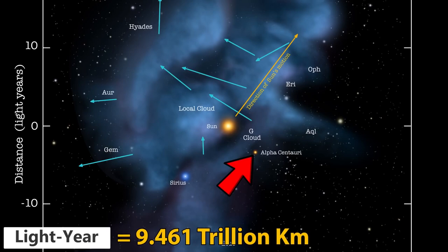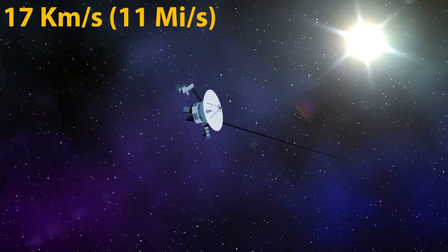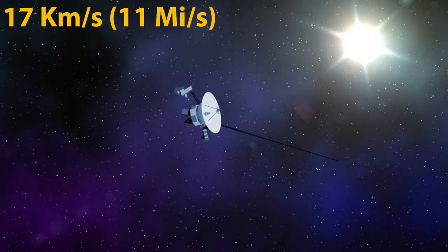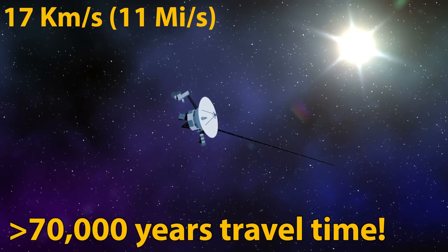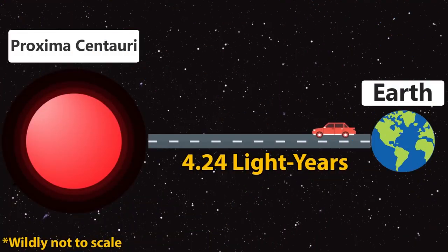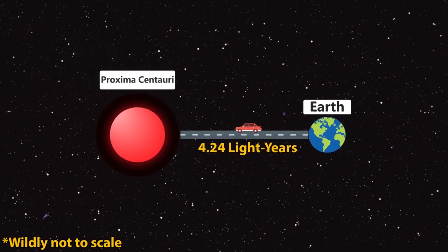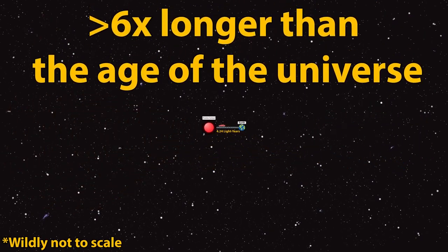The star Proxima Centauri here is the closest other star to us other than our sun. But it's still 4.24 light years away from us. To put that into perspective, if it was heading in the right direction, it would still take Voyager 1 over 70,000 years to reach it. In other words, if you drove your car at 100 kilometers an hour like in our previous example to the moon, it would take over 6 times longer than the entire age of the universe is just to finally get there. And it wouldn't even exist still when you arrived.